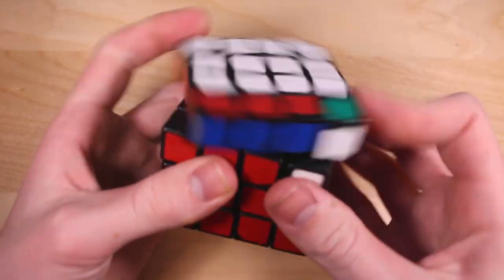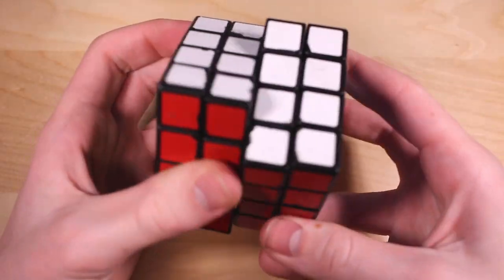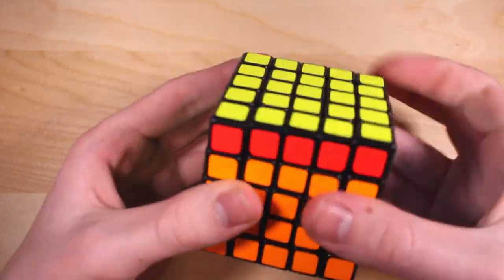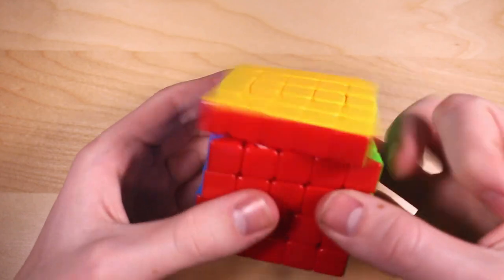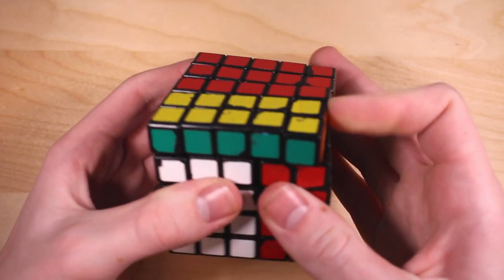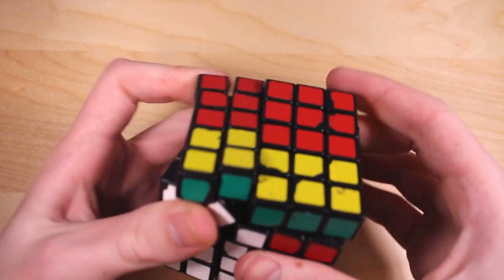Shengxiao 4x4 version 5. Pretty terrible cube. Original Yushin 5x5. Kind of old, but still kind of good. Cyclone Boys 5x5. An okay 5x5. Original Shengxiao 5x5. Not a good 5x5.